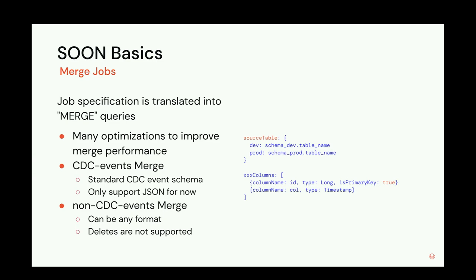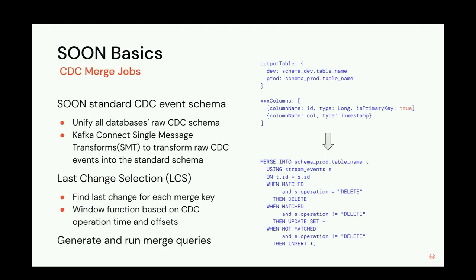If any column or multiple columns are marked as true for 'is_primary_key', Swoom knows it's a merge job. For merge jobs, we've implemented many optimizations to improve merge performance, covered later. There are two merge scenarios: merge for CDC events and merge for non-CDC events. For CDC event merge, the event must follow the standard CDC event schema. For now, CDC event merge only supports JSON format. For non-CDC event merge, any format works, but deletes are not supported.